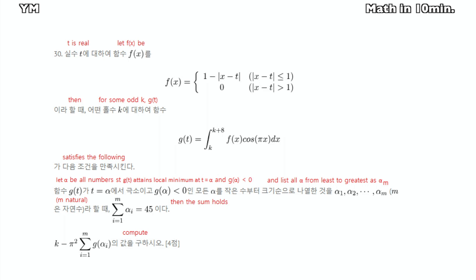At this time, let me show how I solved this problem. To interpret this problem, suppose that t is any real number, fx is defined as in the problem, and for some odd number k, gt is defined as in the problem.